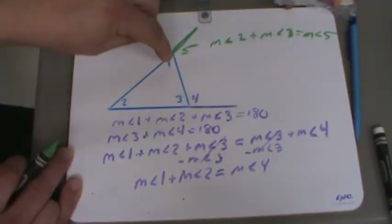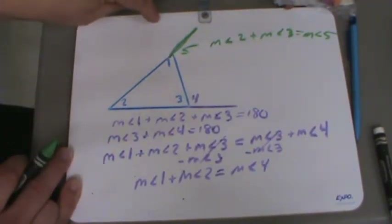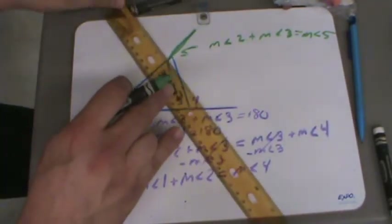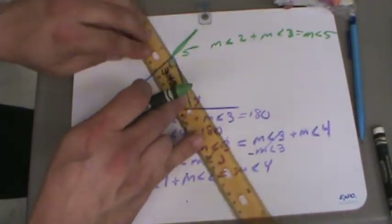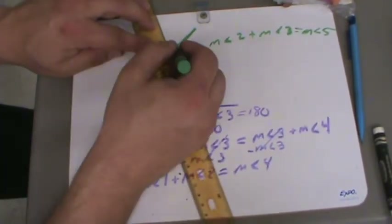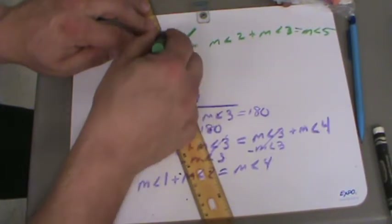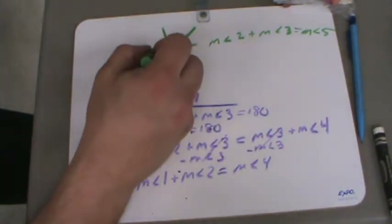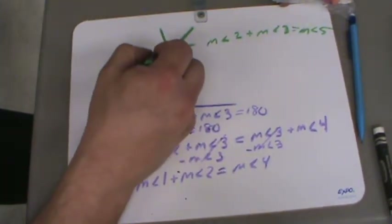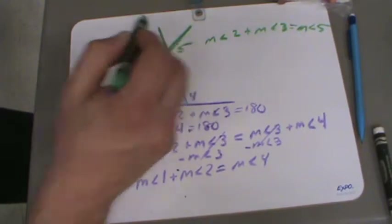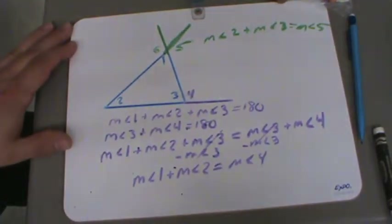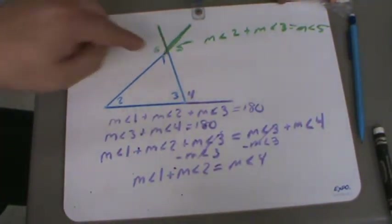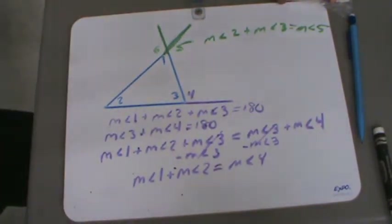If I were to extend it out this way instead — if I extended this line like this — this angle I'll call 6.